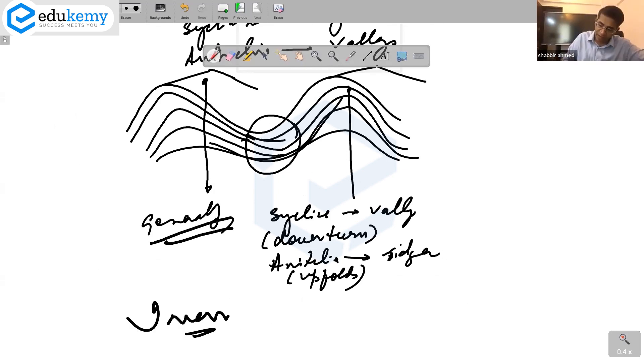In inversion, this reverses. Rather than syncline remaining the valleys, syncline now becomes ridges. Rather than anticline remaining the ridges, the anticline become the valleys. In inversion, the syncline becomes the ridge, and the anticline becomes the valleys.